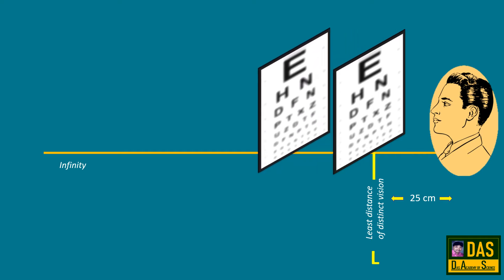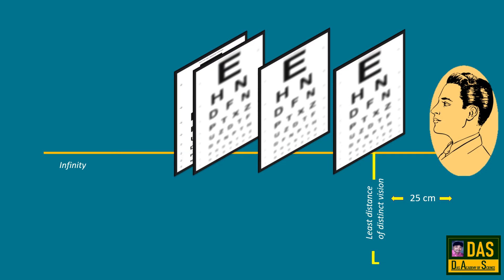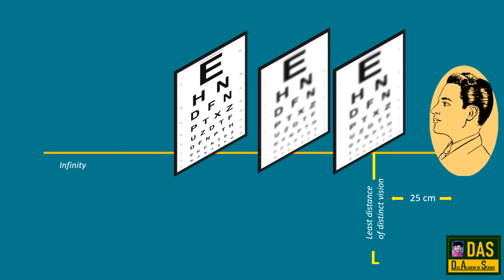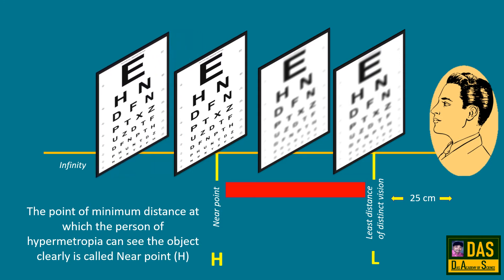If we move the object some distance away from the eye, the vision is still blurred. Further moving the object more, the vision remains blurred. But after a certain point, the vision is clear. The point of minimum distance at which a person with hypermetropia can see the object clearly is called the near point, denoted by h. Between the point of least distance of distinct vision and near point, the vision is blurred. If the object is beyond near point up to infinity, the vision is clear.